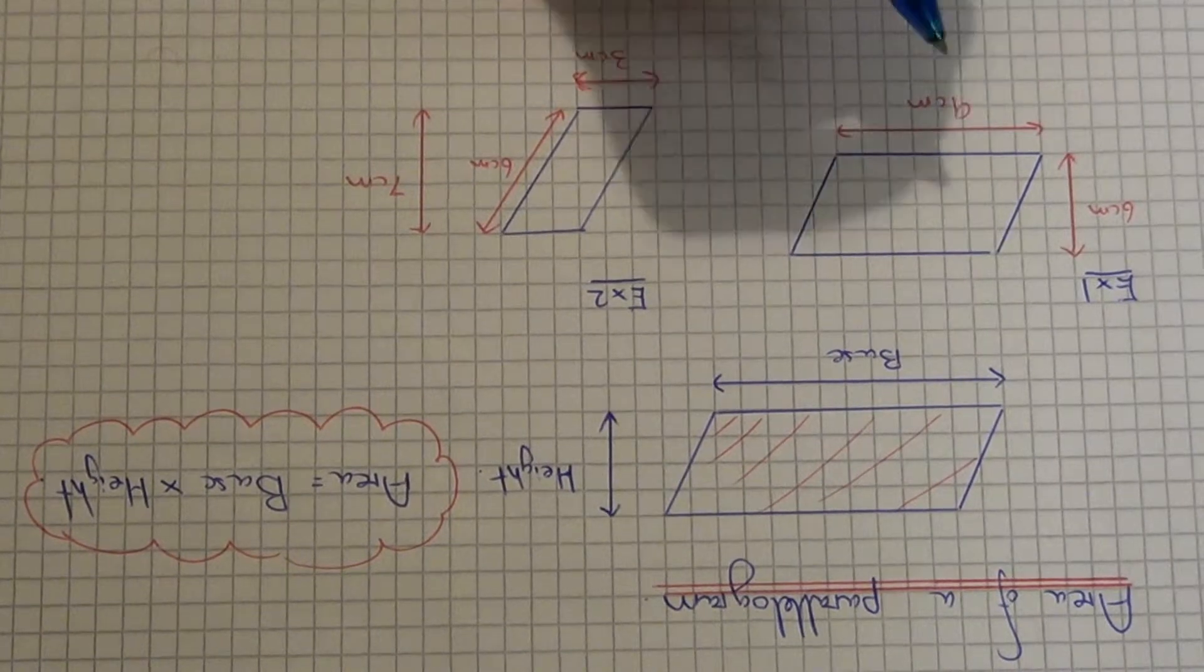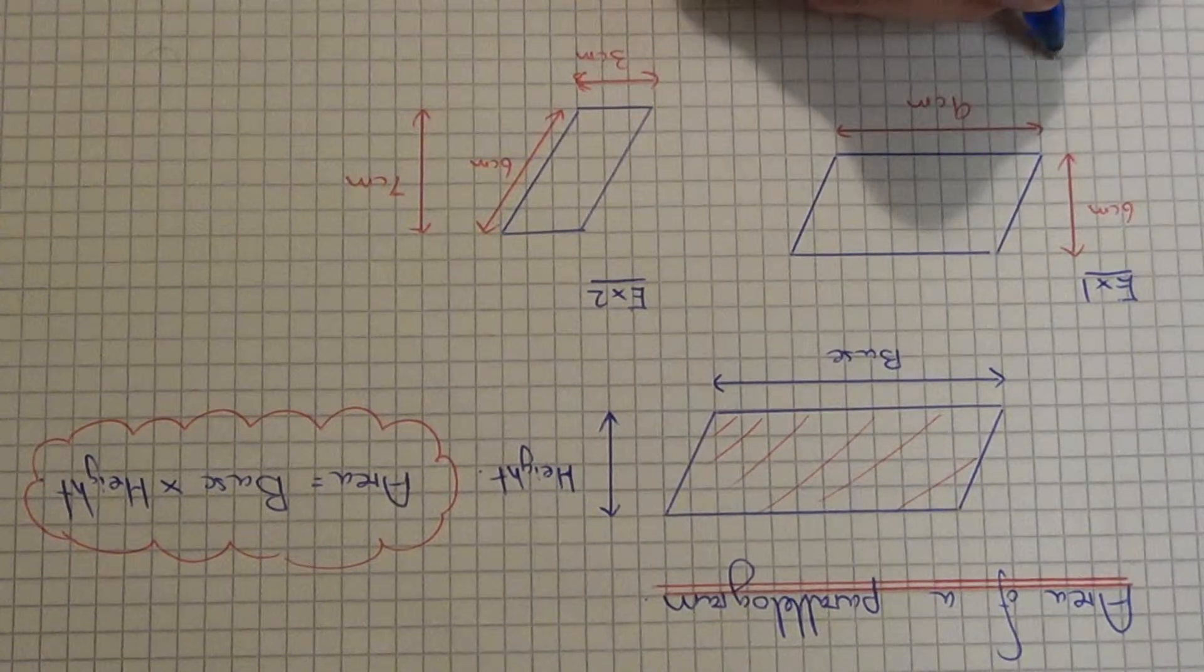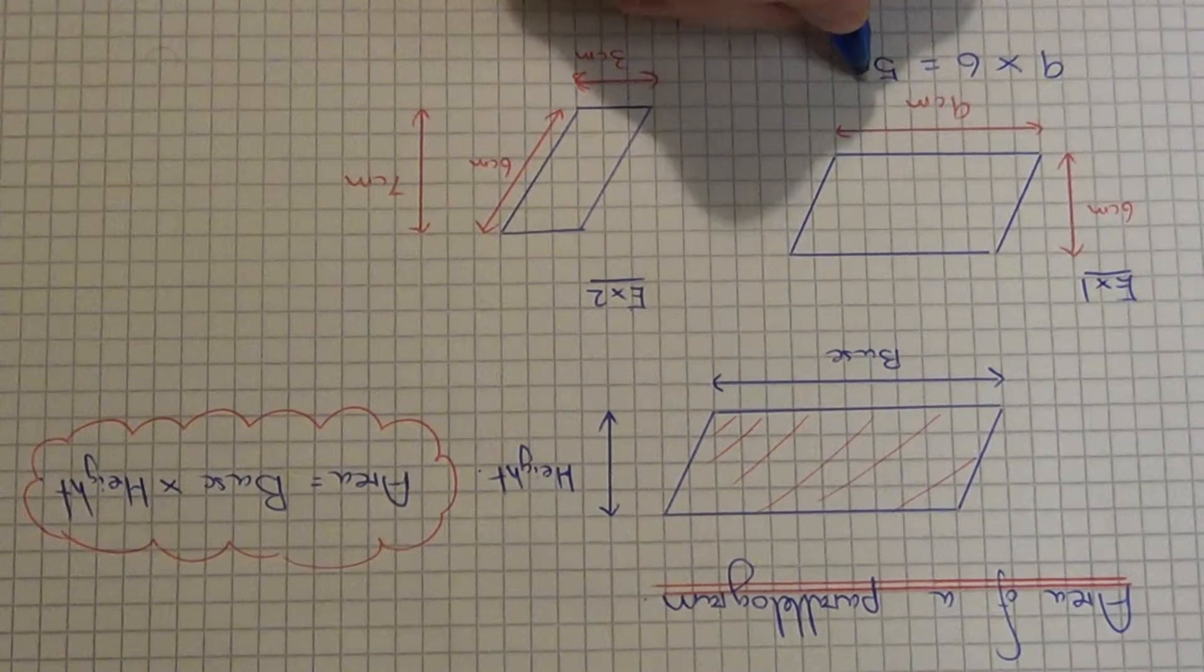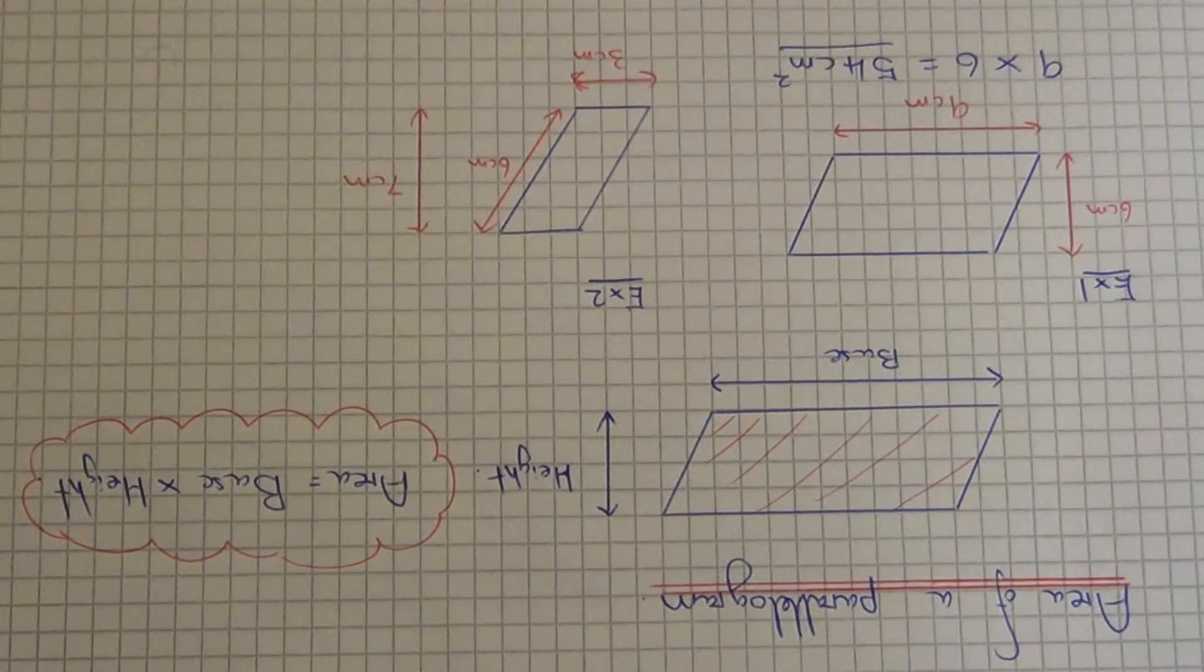So to work out the area of this parallelogram, you just need to multiply nine by six. So nine times six is 54 centimetres squared. And that's all you need to do.